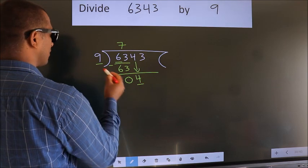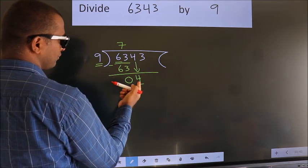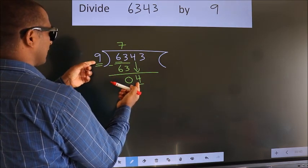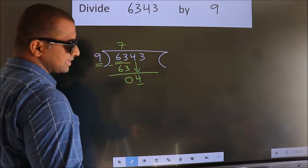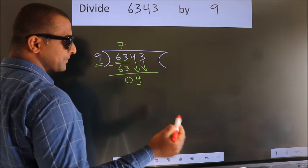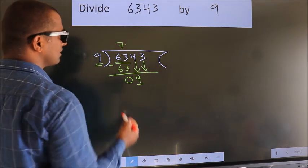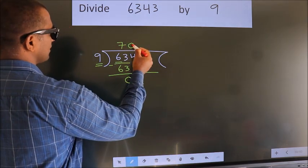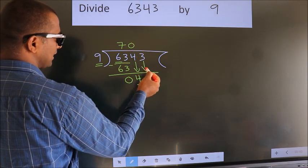Here we have 4. Here 9. 4 smaller than 9. So we should bring down the second number. And the rule to bring down second number is put 0 here. Then only we can bring down this number.